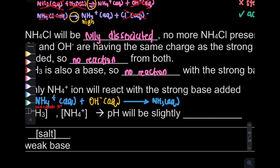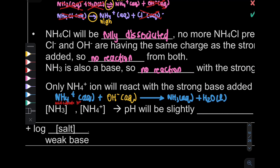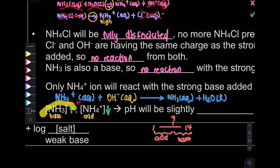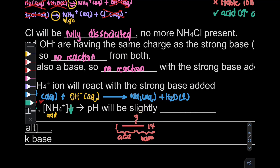So what happens: the concentration of NH3 will increase because NH4+ reacts with the OH minus added. NH4+ will decrease. NH3 is your base and NH4+ is your acid. Since we added base, the concentration of base increases. On the pH scale from 1 to 14, if the base concentration increases, the pH will slightly increase.